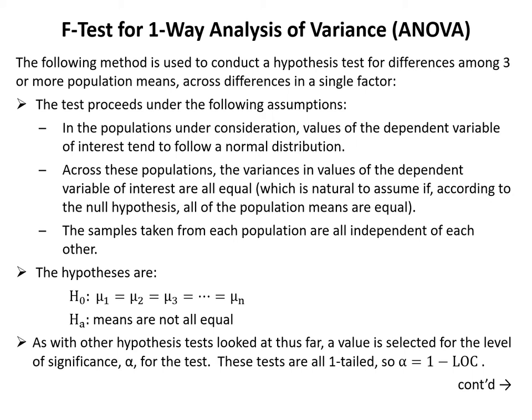The hypotheses are: H₀ is that all means mu 1 through mu n are equal, and Hₐ is that the means are not all equal. As with other hypothesis tests, a value is selected for the level of significance alpha. These tests are all one-tailed, so alpha equals 1 minus the level of confidence.